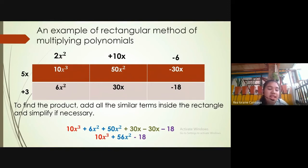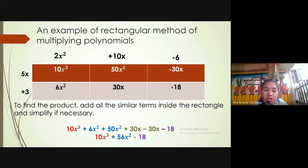So 10x cubed, plus 6x squared plus 50x squared, plus 30x minus 30x, minus 18. Simplifying all of that, the result is 10x cubed plus 56x squared minus 18.